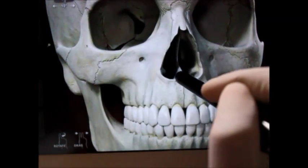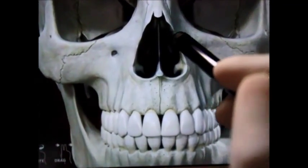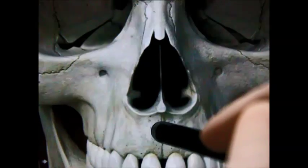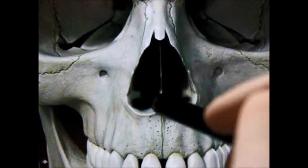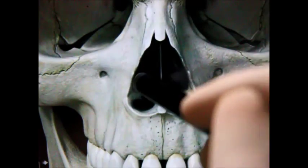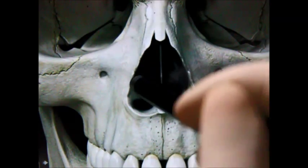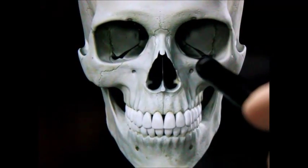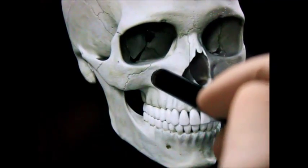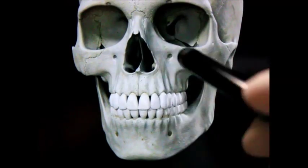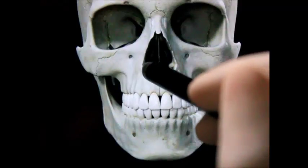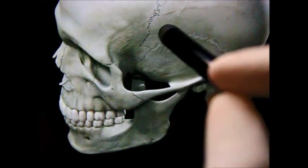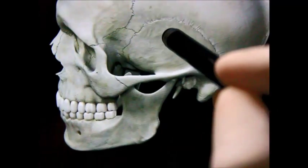Here we can see the piriform aperture, the entry to the nasal cavity. You can see the nasal crest, vomer, one side of the nasal cavity here and the other side there. Now we're moving towards the lateral part of the skull anatomy.